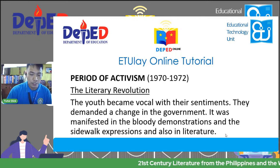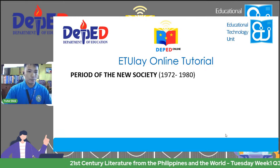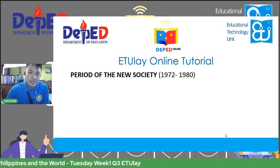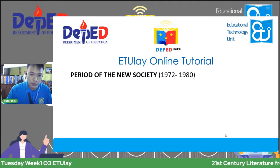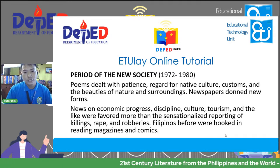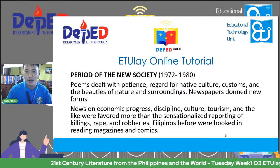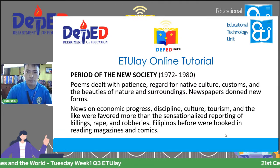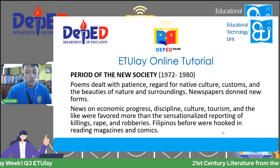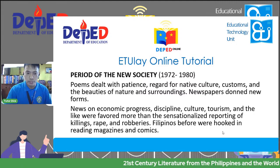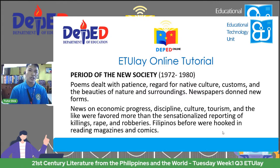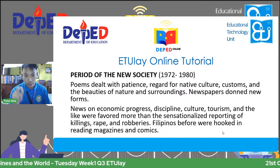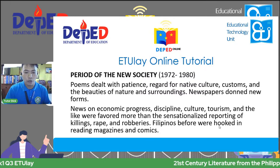The period of activism: 1970 to 1972. After this, the period of the new society, slowly regaining our own identity, 1972 to 1980. Poems dealt with patience, regard for native culture, customs, and the beauties of nature and surroundings. Newspapers took on new form — news and economic progress, discipline, culture, tourism, and life were favored more than sensationalized reporting. Filipinos before were hooked on reading magazines and comic books or comics.